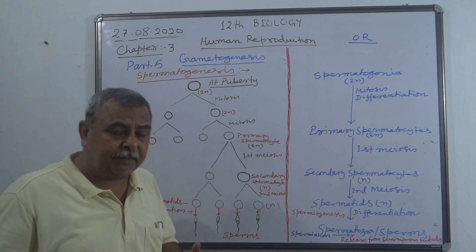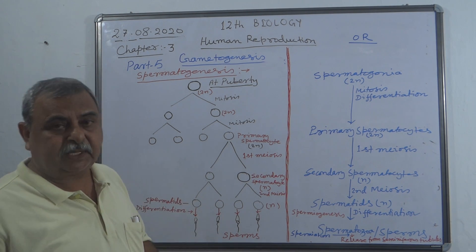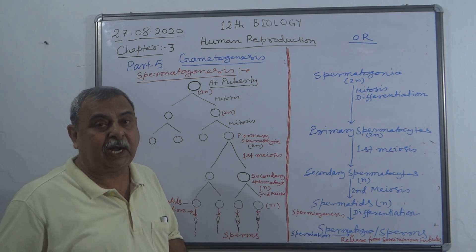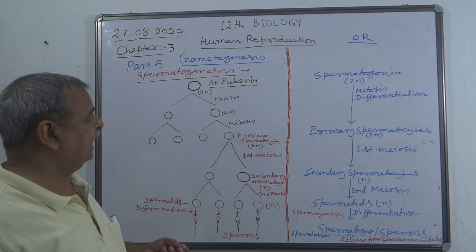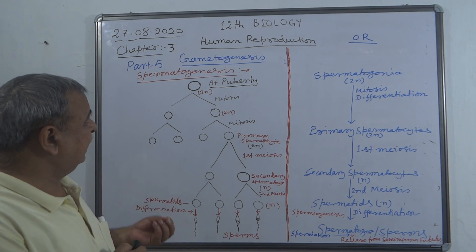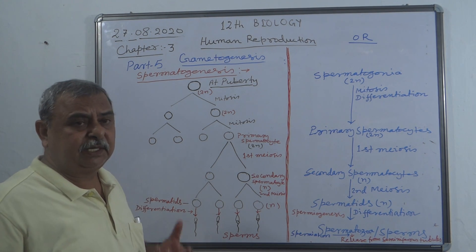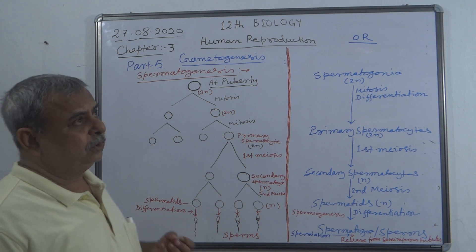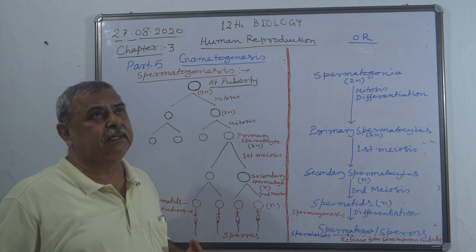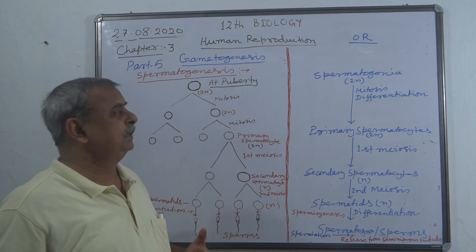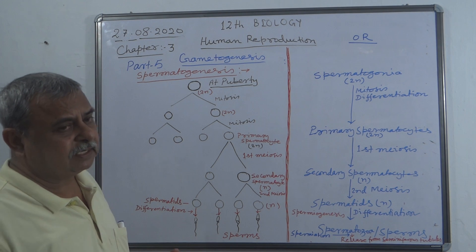When we talk about male gametes, we discuss the male body — specifically the testes. Female gametes are formed in the ovary in the female body. When we talk about the age of puberty, these primary sex organs, both in male and female, become active and attain their sexual maturity.